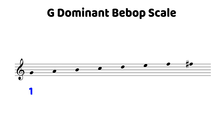The notes of the scale are G, A, B, C, D, E, F, F-sharp, and G. Notice we have that added major seven. So if you want to start integrating the scale into your playing, you can start by descending the scale from every chord tone.